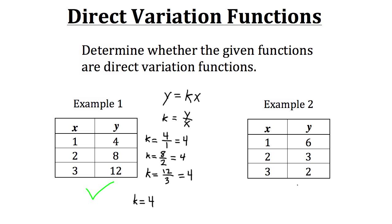Now let's take a look at example 2 and do the same test. Starting with the first point (1, 6): we take the output of 6 divided by the input of 1, which gives us 6 — so k should be 6 throughout. But looking at the second point, we take the output of 3 divided by the input of 2, and 3 divided by 2 is not 6. Since the k values are not the same, example 2 is not a direct variation function.